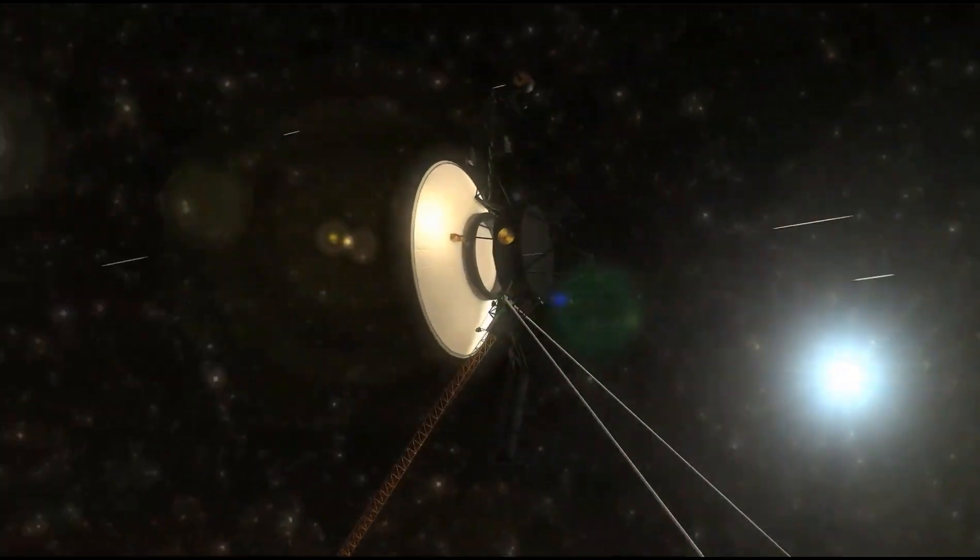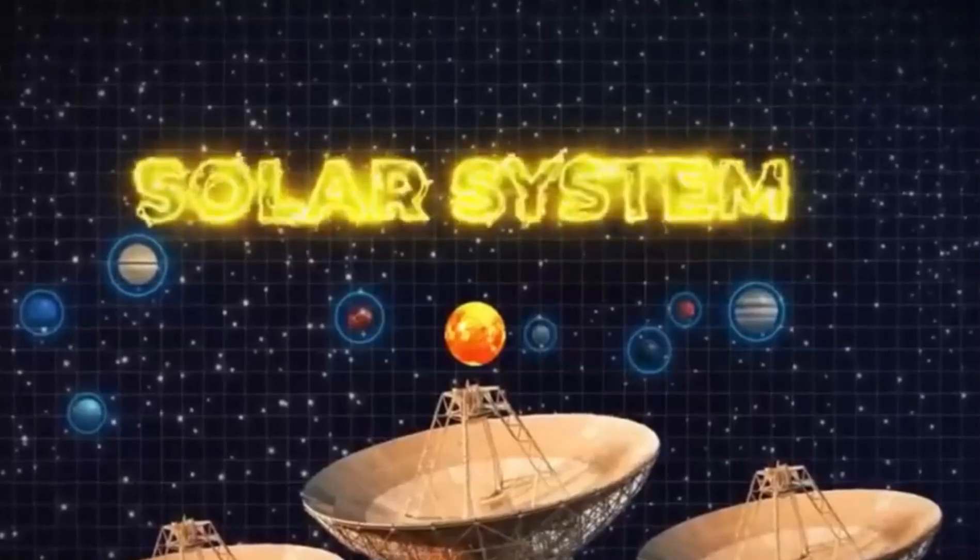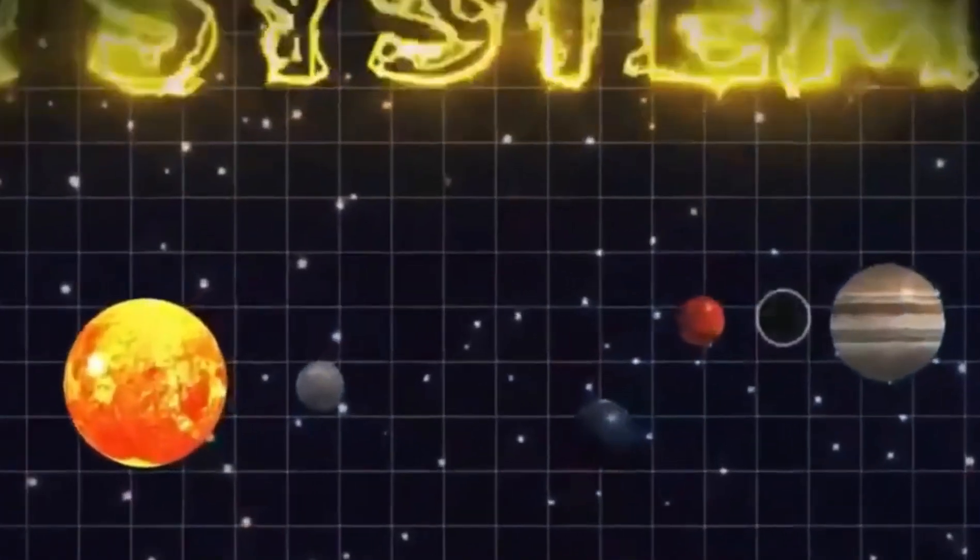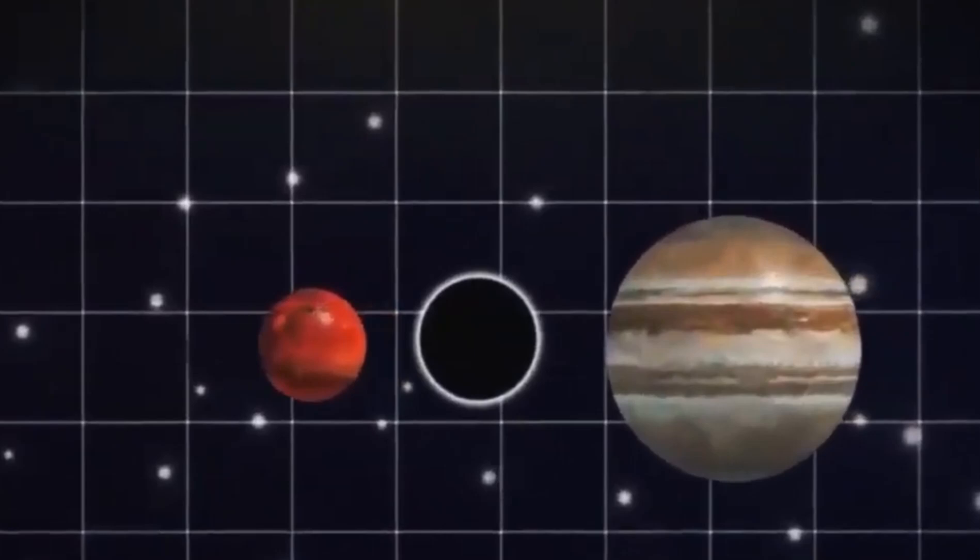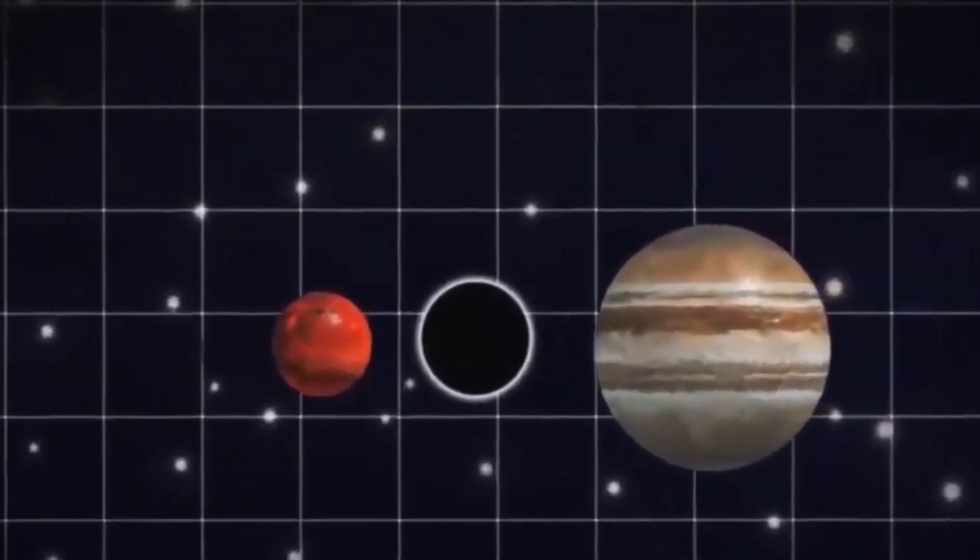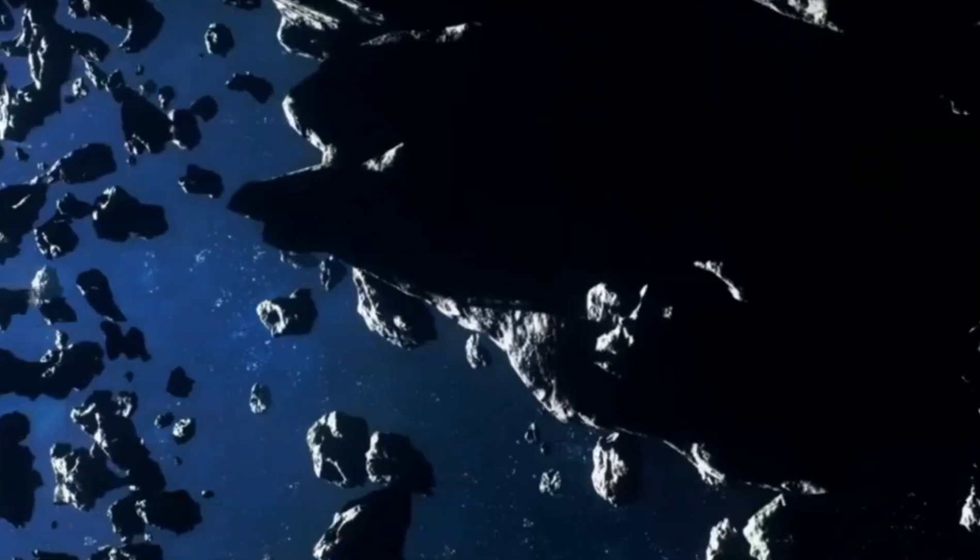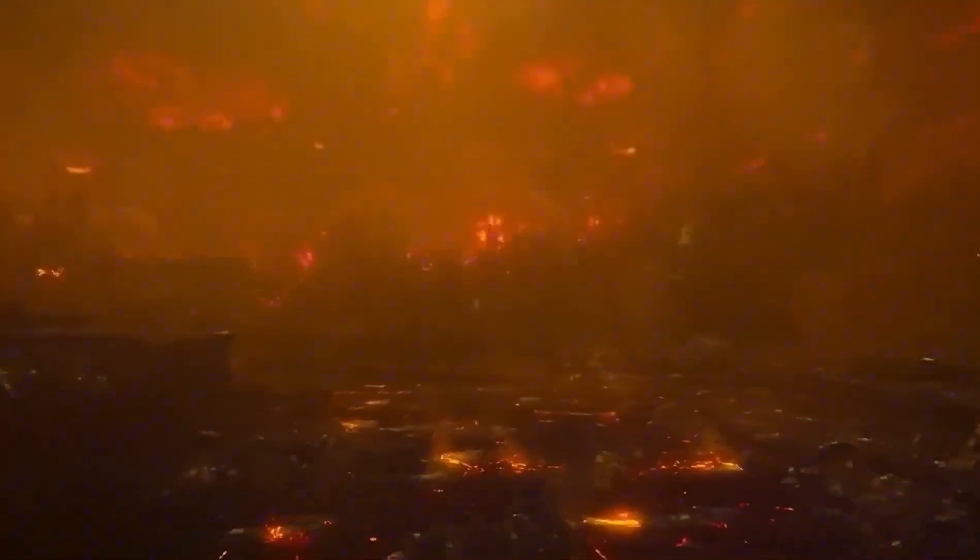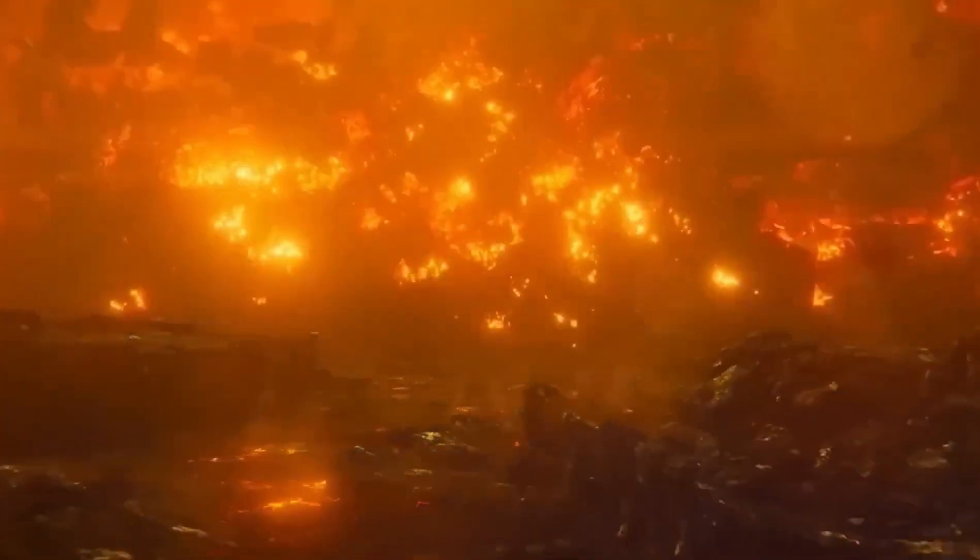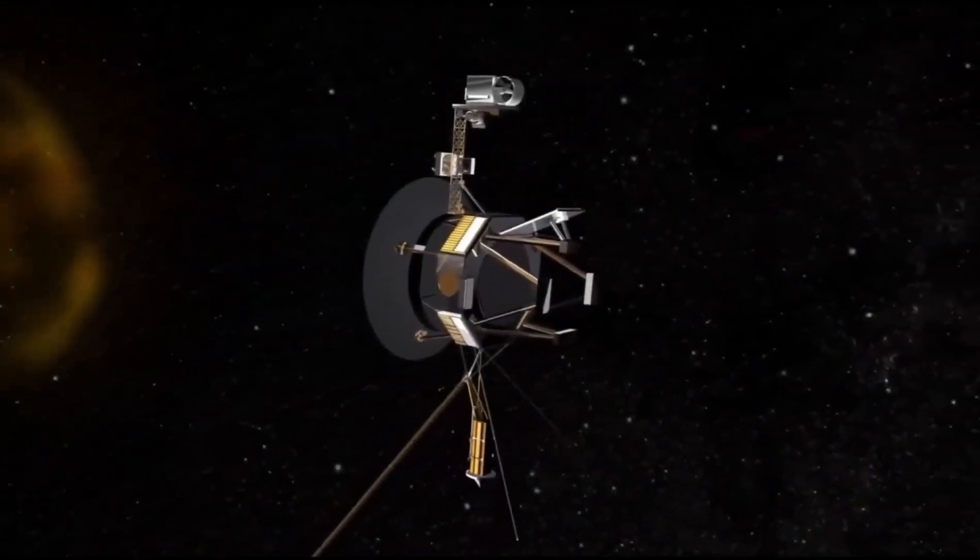Voyager 1 was launched after Voyager 2 because of a quicker path. It left the asteroid belt before its twin on December 15, 1977, and in April 1978, while it was around 165 million miles from the planet, it started its Jovian imaging mission.